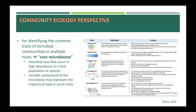As a pathway to identify the common traits of microbial communities in multiple hosts, many studies have characterized the so-called core microbiome, which comprises microbial taxa that occur in high abundance in a host population or species. However, it would be a mistake to focus solely on the core microbiome taxa or functions, as a variable component of the microbiome represents the majority of taxa in some hosts. Several rare or transient taxa have been reported that have a disproportionately large effect relative to their abundance or their presence in the host. In contrast, some abundant taxa may interact minimally with the host or other microbial members.